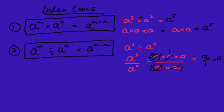Often what I do is say: one on top, one on bottom, they cancel out; one on top, one on bottom, they cancel out — remembering there is actually a one on the bottom — and you're just left with a.